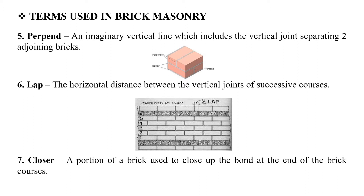Next is the Perpend. This is an imaginary vertical line which includes the vertical joint separating two adjoining bricks. When we take a mortar joint, it forms a vertical joint, and that imaginary vertical line is the Perpend.